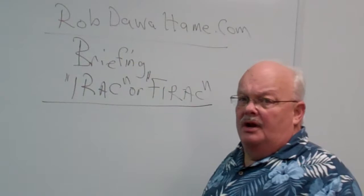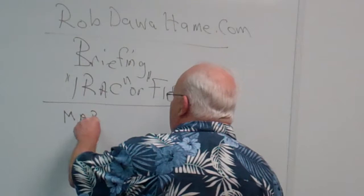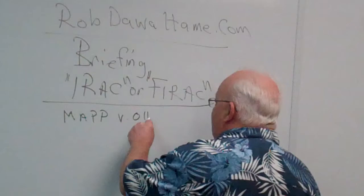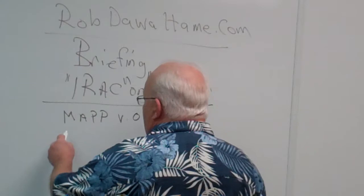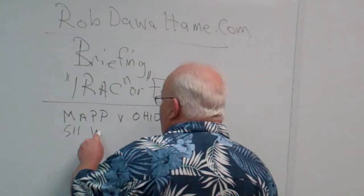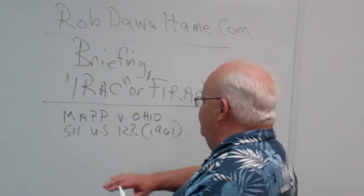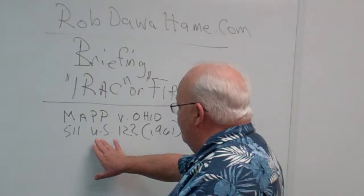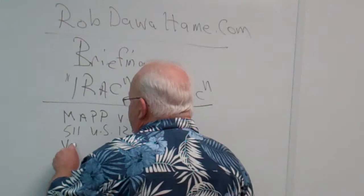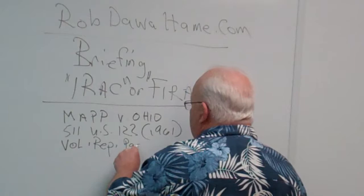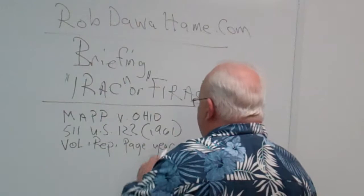Another thing I want to talk about is that you always want to include the heading. So it would be like Mapp versus Ohio, and then I'm just making this up, but let's say that it's like 511 U.S. 122, and then the year, 1961. And so, in other words, you need the names of the parties, you need the volume number, this is the reporter, and this is the page. So volume, reporter, page,